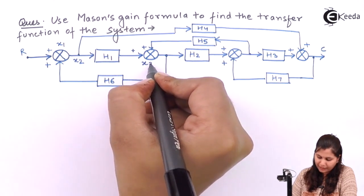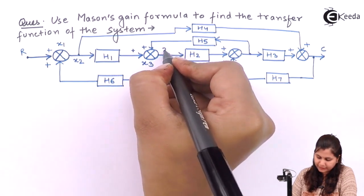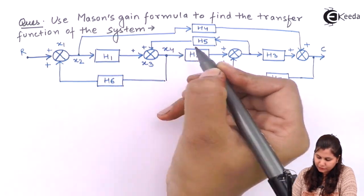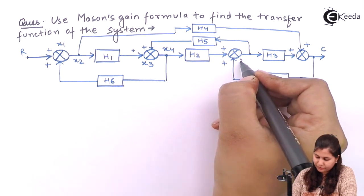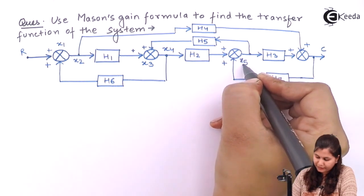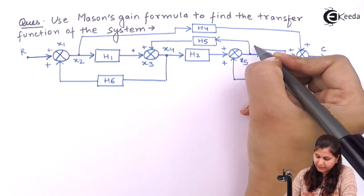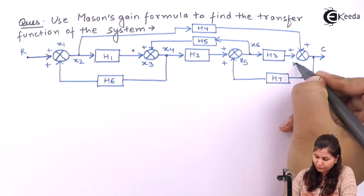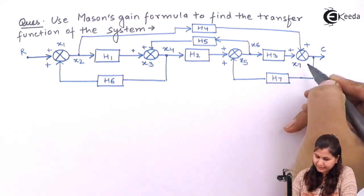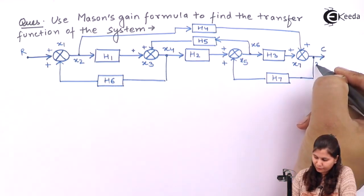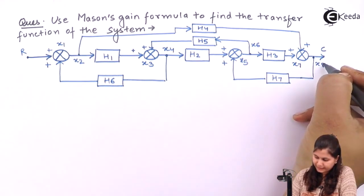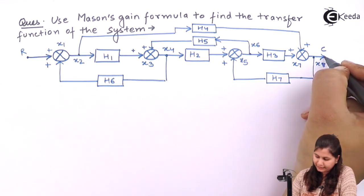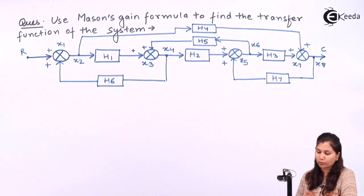For this summing point we will have X3, then X4, this summing point will be X5, this takeoff point will be X6, this summing point will be X7, and this takeoff point will be X8, and this will be the output node for C.